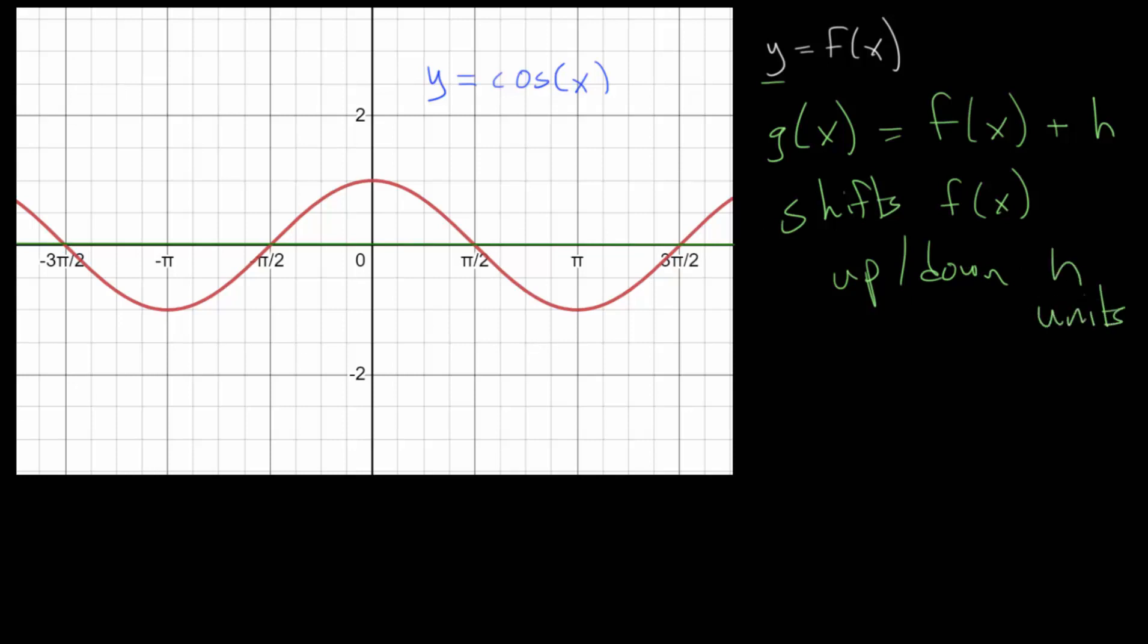So if we have some function, let's say it looks something like this, and we can call this our f of x. And we want to consider what is g of x, which is f of x plus two. So this will take all of our y values and shift them up two units, no matter where they are.